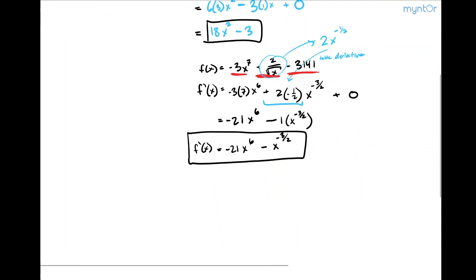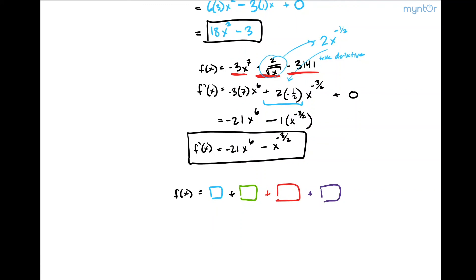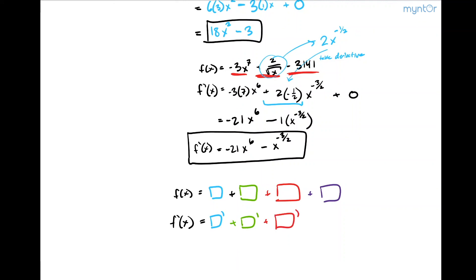And that's basically the sum and difference rule. If you have a function that is equal to something plus another something, plus another something, the sum and difference rule says that f prime is going to be equal to the derivative of each of those terms added together.